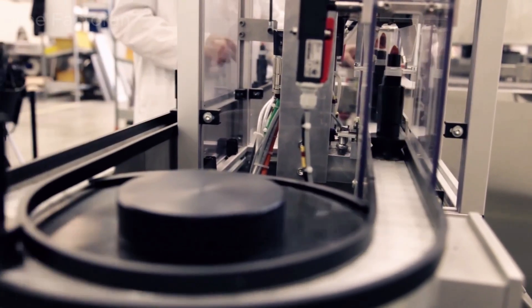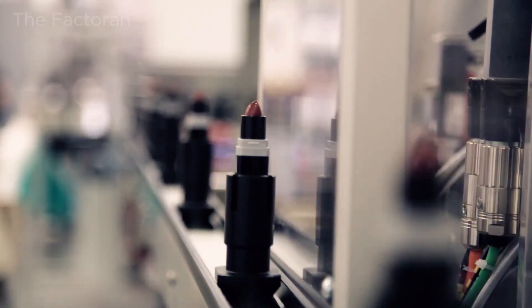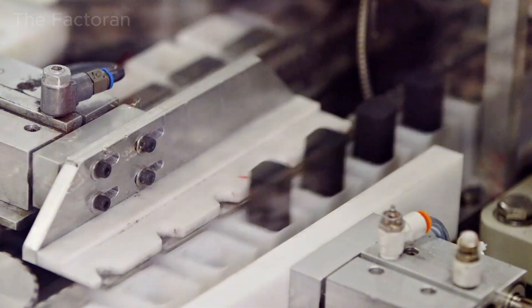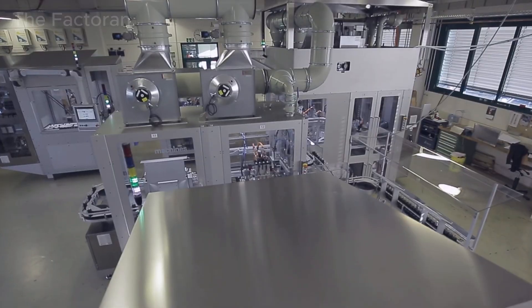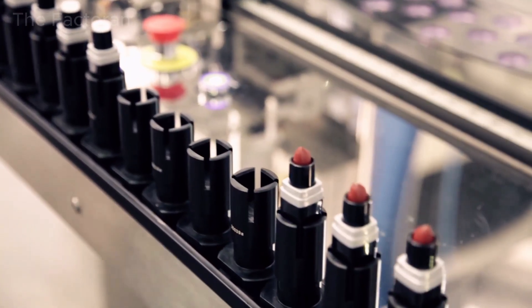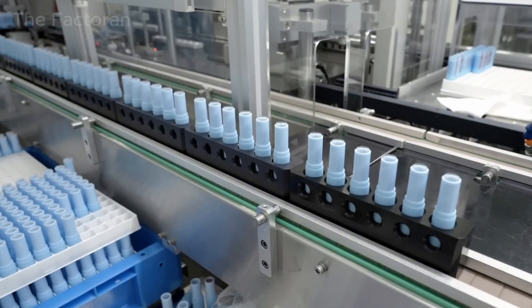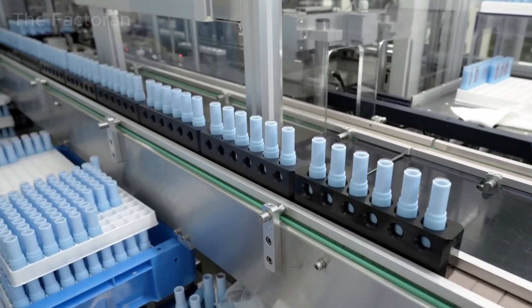Once the lipstick batches have passed quality control, they are transferred to the automated capping station. Here, lipstick caps are fed into rotary tables or vibrating conveyors, where they are oriented and aligned in the correct position before assembly. The lipstick bodies move continuously along the conveyor toward the capping machine.